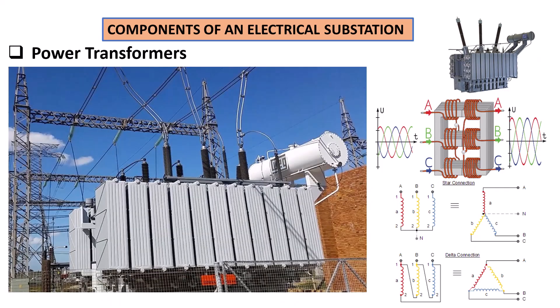The first equipment we're going to look at is the power transformer. The power transformer is the most important equipment in an electrical substation — without it, nothing will literally be done. Just imagine on your distribution box at home, you are expecting a voltage of 230 volts or 120 volt AC.